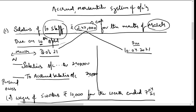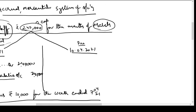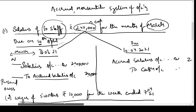Now, what is the entry on 10th April? On 10th April we will be paying the money to the staff. So the entry is: Accrued Salaries Account — Debit 2,40,000; Cash Account — Credit 2,40,000. This is the entry recorded in the accrual system of accounting.